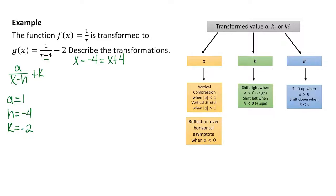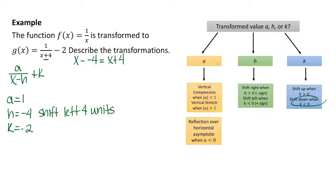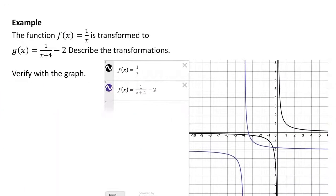h is negative 4, so we have a shift left because that's why it looks like a plus sign in the problem — this means a shift left 4 units. Then k is negative 2, so k is less than 0, giving us a shift down 2 units. You can graph both functions to verify: the graph in purple is in fact shifted left 4 units and down 2 units.